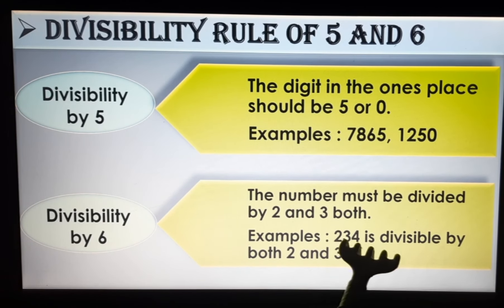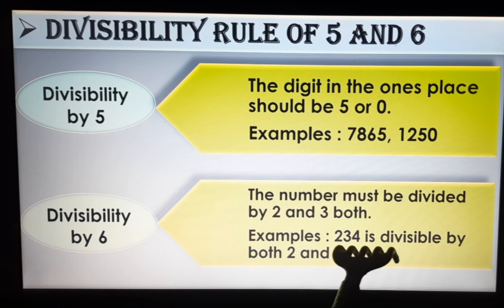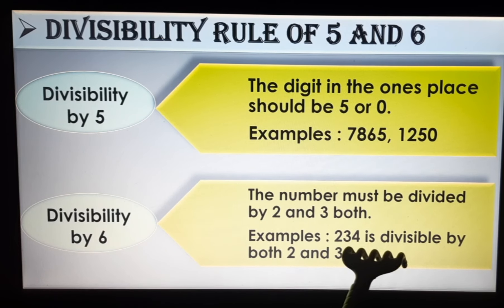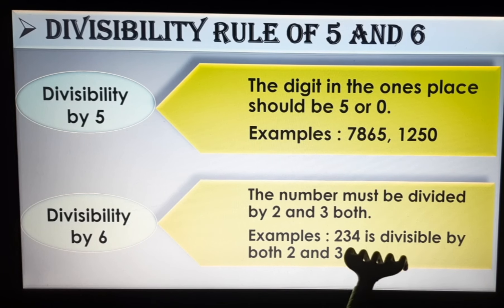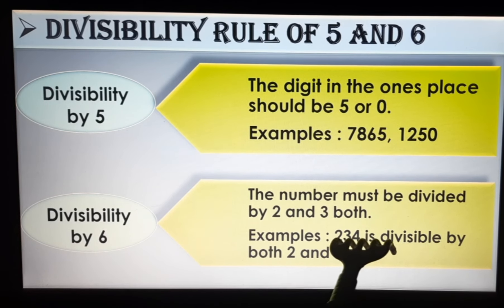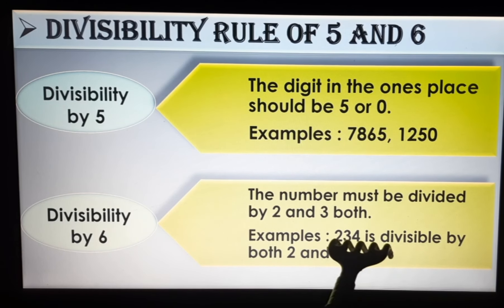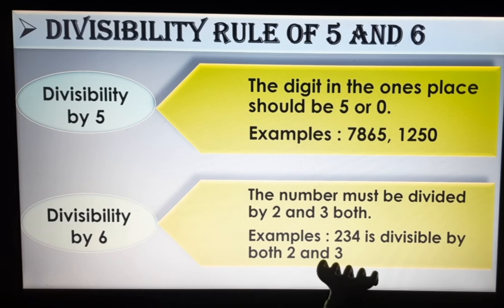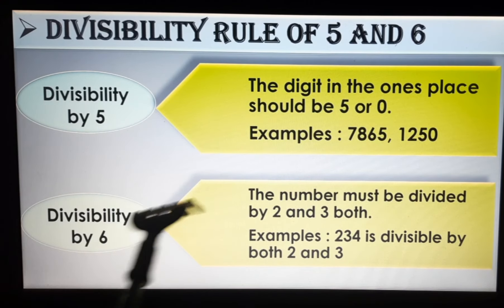For example, take the number 234. First check divisibility by 2: the ones place digit is 4, and since 4 is in {0, 2, 4, 6, 8}, it is divisible by 2. Now check divisibility by 3: add the digits — 2 + 3 + 4 = 9. Since 9 is divisible by 3, it is also divisible by 3. Since 234 is divisible by both 2 and 3, it means 234 is also divisible by 6. That is the divisibility rule for 5 and 6.